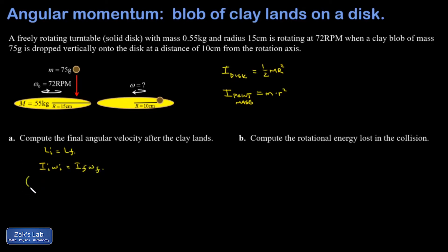And my initial moment of inertia is just going to be one half MR squared for that disk. And my final moment of inertia, I have now the disk plus a point mass stuck on it. So I have one half MR squared for the disk plus little m little r squared for the blob of clay.